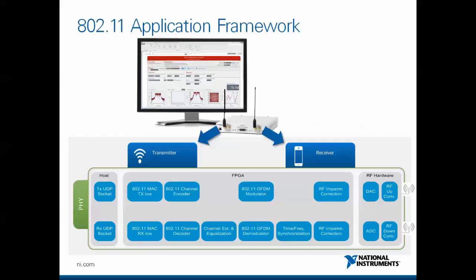Here you can see a simplified block diagram of the 802.11 application framework. Both the transmitter and the receiver functionality are implemented on the FPGA, which is inside the USRP Rio or the FlexRio. The host provides user data.